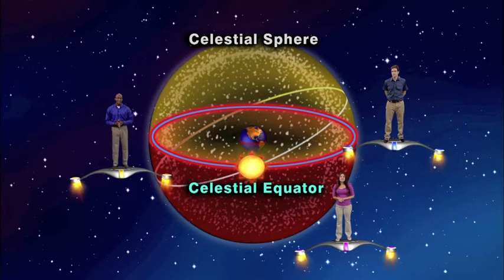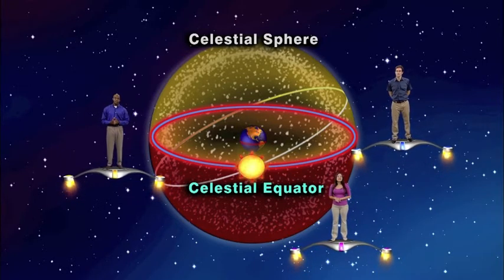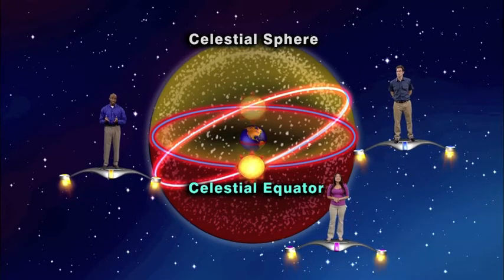Now, back to the celestial equator. It's a line which is an extension of the Earth's equator. If we also draw a line that is the path that the sun follows, the equinoxes are where those two lines cross.